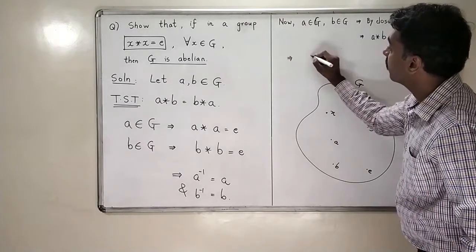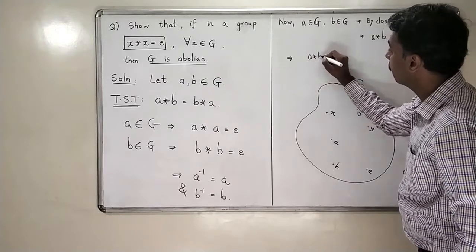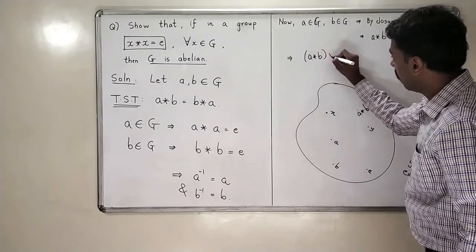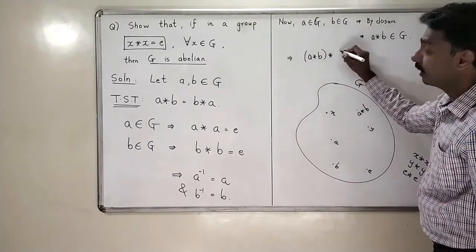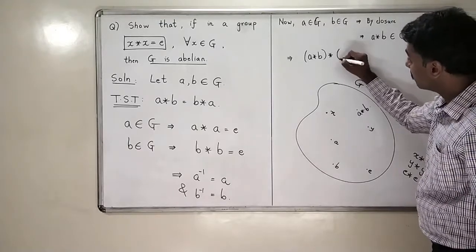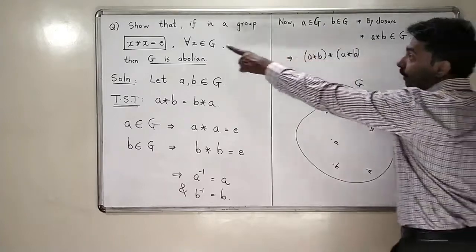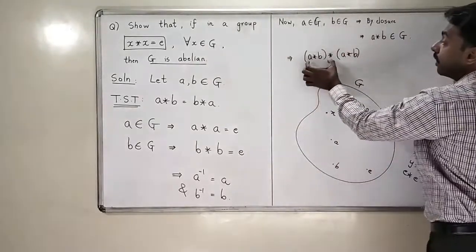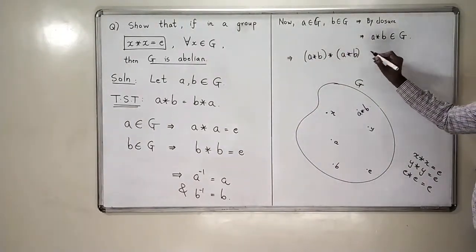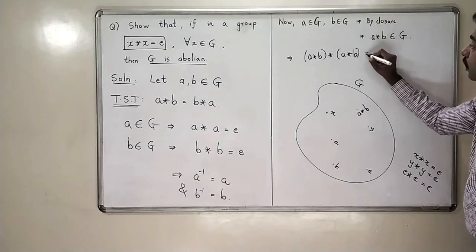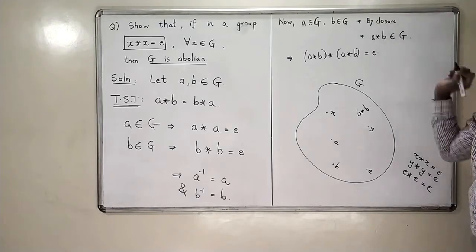This means that a star b star a star b. Same property. I am using this property for which element? For a star b. A star b star a star b is also equal to identity.